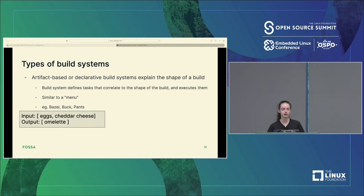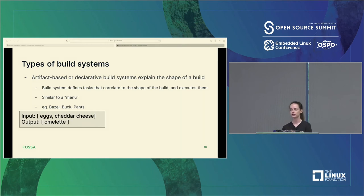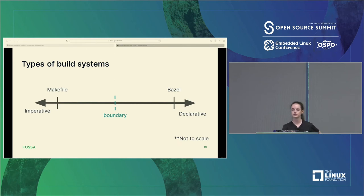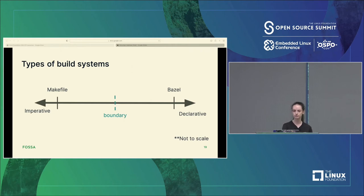The second type is an artifact-based or declarative build system. In this type, you describe the shape of your build — these are the inputs, these are the binaries or results we expect as outputs. It's more like a menu where you know the ingredients going into your omelet and what an omelet looks like. You go to your friend and say, here are some eggs, some cheese, some green onions — please make me an omelet. The friend knows what an omelet looks like and figures out the steps themselves. Build systems vary from very imperative to less imperative to almost declarative to fully declarative, but a build system is explicitly one or the other. Two examples: make files, which are strongly imperative, and Bazel build files, which are strongly declarative.